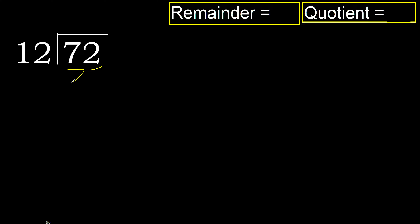72 is not less than 12, therefore we work with 72. We need to find which number multiplied by 12 is nearest to 72 but not greater. 12 multiplied by 8 is greater.